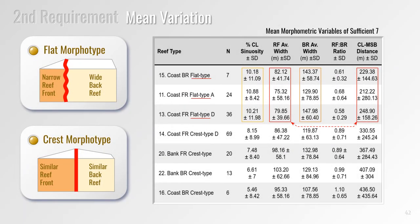Looking at the mean morphometric data in the table, the three flat types have narrow reef fronts with shorter steeper slopes and much larger back reef areas and more sinuous crest lines. Crest types are more variable but generally have similar sized reef front and back reef areas, a more gentle reef front slope, and straighter crest lines. From this limited data we can already identify two reef morphotypes: flat morphotypes with more distinctive morphometrics reflecting sinuous reefs with narrow steep reef fronts and large back reef areas; and crest morphotypes with more variable morphometrics, generally straighter with equal-sized back reef and reef front areas.